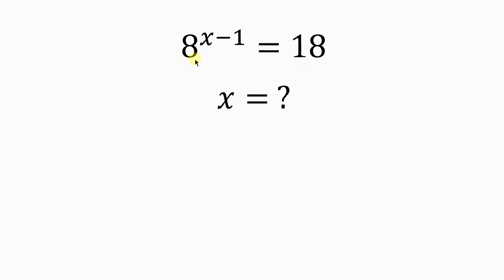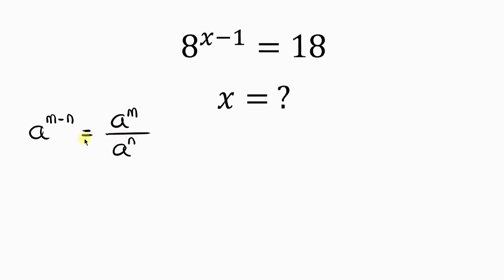Our first step will be to apply the law of indices, which says when I have a to the m minus n, this is the same as a to the m all over a to the n. So applying this law of indices here, this expression becomes 8 to the x all over 8 to the 1, which is equal to 18.